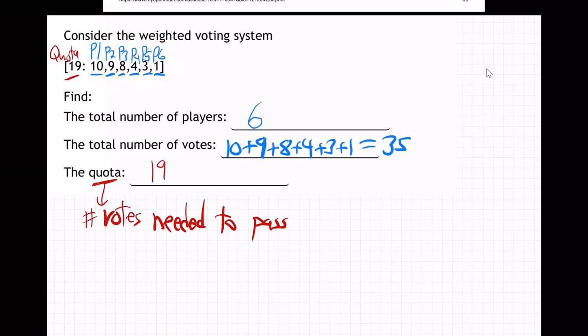So this is called a weighted voting system, and how it works is each of the players have a different amount of votes. So this might be like for a stock company that is traded on the open market, and different investors have different amounts of money invested.